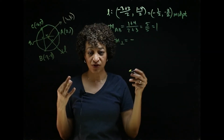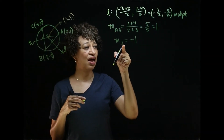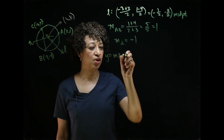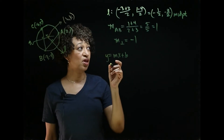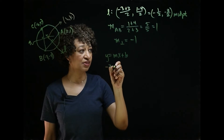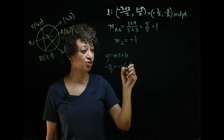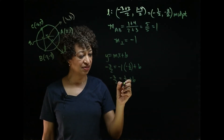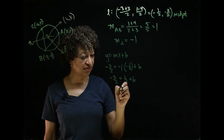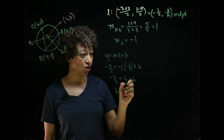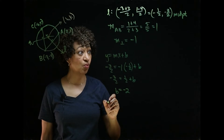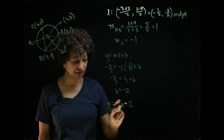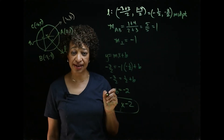The opposite reciprocal of 1: the opposite of 1 is negative 1, and the reciprocal of 1 is 1, so the slope of line L is negative 1. I'll write the equation using slope-intercept form, plugging in the midpoint as the point on the line. So negative three-halves equals negative 1 times negative one-half plus b. Subtracting one-half from both sides gives b equals negative two. So the equation of line L is y equals negative x minus 2.